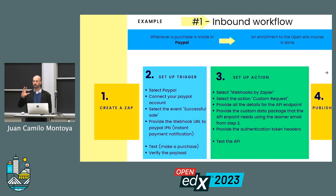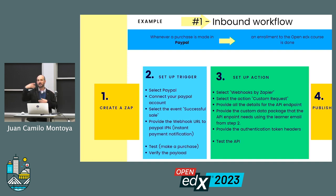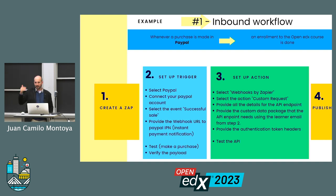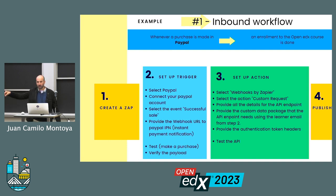Let's run through an inbound workflow example. It's a four-step procedure in Zapier. Create the Zap, then set up the trigger: select PayPal, provide credentials to authorize PayPal to talk to Zapier, and select the event — a successful sale. Zapier provides a webhook URL that you copy and paste into PayPal's IPN — Instant Payment Notification — system, telling PayPal to notify Zapier when a payment is successful. You can test it by making a purchase and verifying that Zapier received the correct payload with payment information.